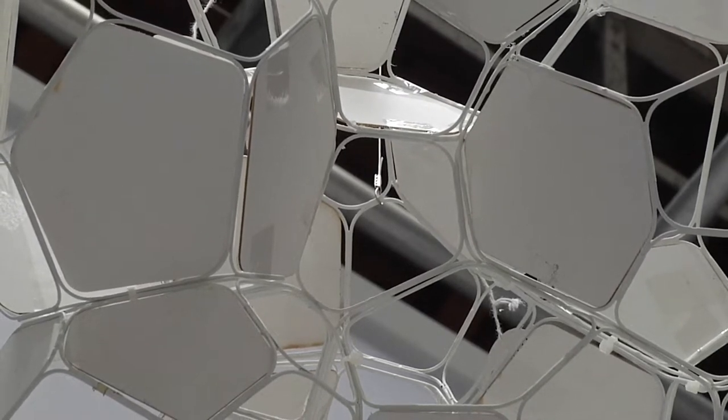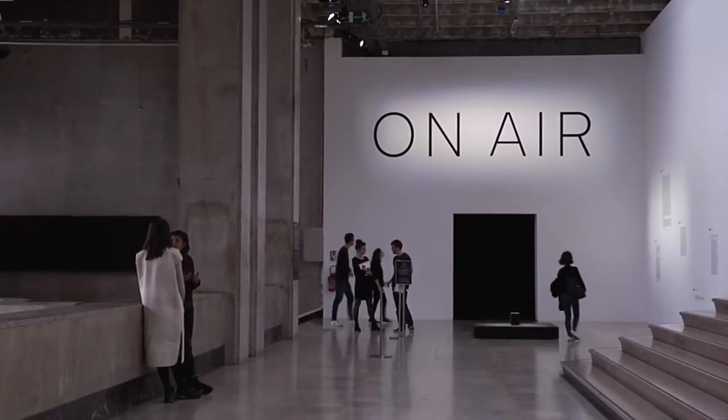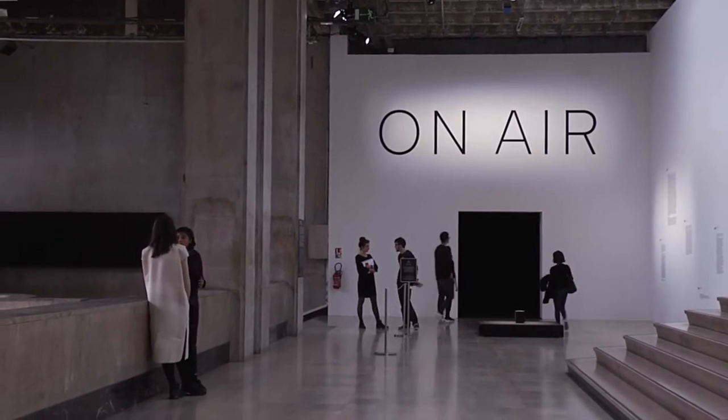Le Palais de Tokyo a invité pour sa quatrième carte blanche l'artiste Thomas Saraceno. La proposition s'appelle « En Air ». Il s'agit de s'interroger sur ce gigantesque océan dans lequel nous existons tous, qui est l'air, et que nous partageons avec un nombre absolument infini d'autres espèces, d'autres phénomènes, humains et non-humains, visibles et non-visibles.